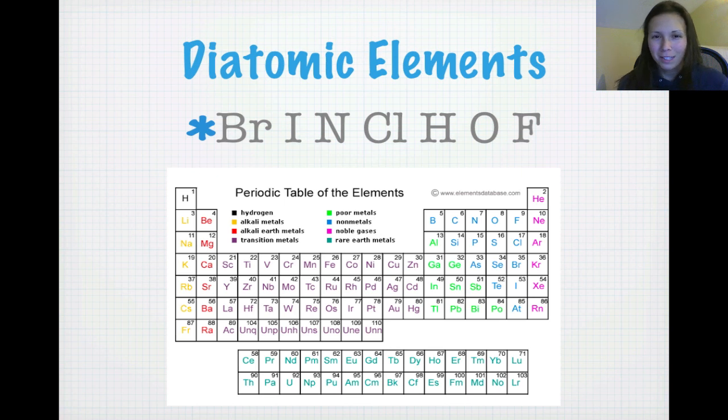So, the way I like to remember this is BrINClHOF. There are seven diatomic elements: bromine, iodine, nitrogen, chlorine, hydrogen, oxygen, and fluorine. They're also known as the magic seven and I'll outline in a second to show you why it's called the magic seven.